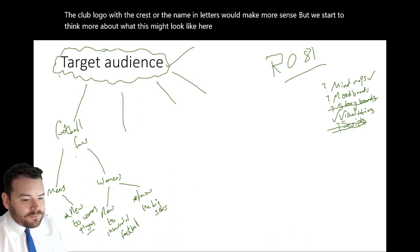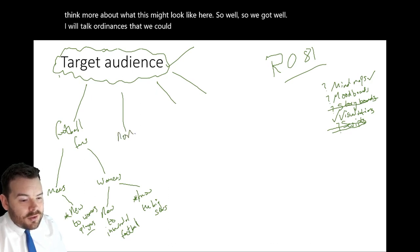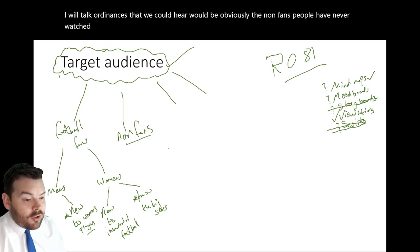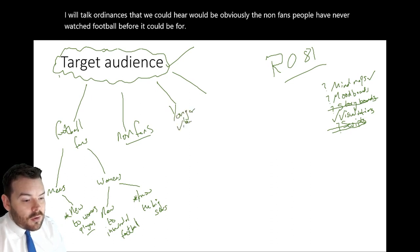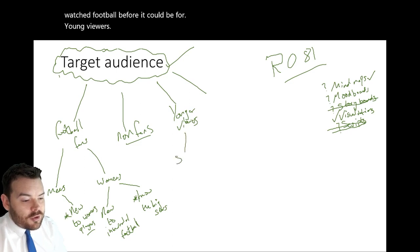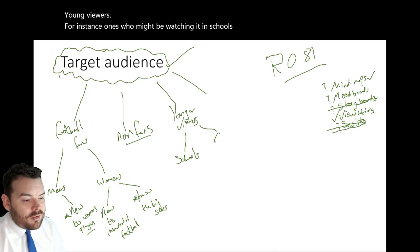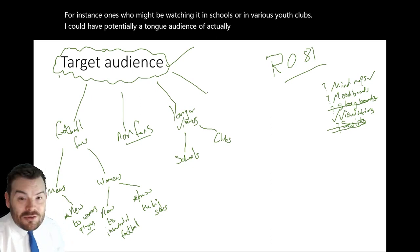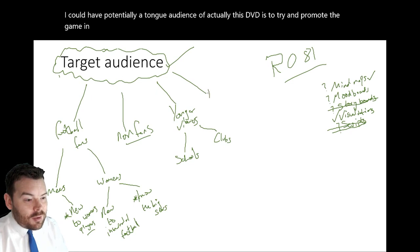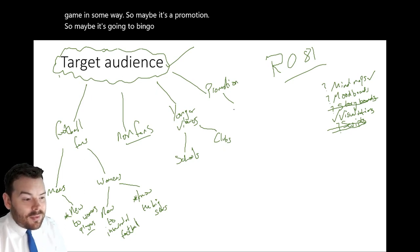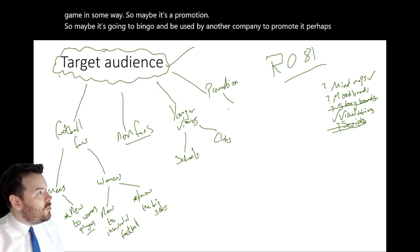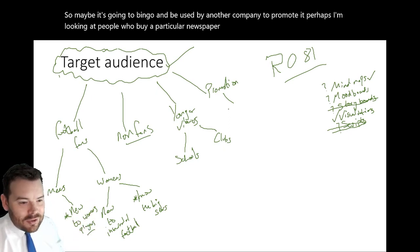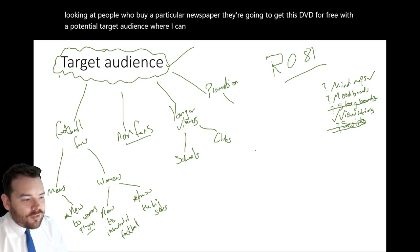So what else have we got? Other target audiences could include non-fans — people who've never watched football before — or young viewers, such as those who might be watching it in schools or youth clubs. I could have a target audience of people this DVD is trying to promote the game to in some way. Maybe it's going to be used by another company to promote it, or perhaps people who buy a particular newspaper get this DVD for free — that's a potential target audience where I could start thinking about what those sorts of people would want.